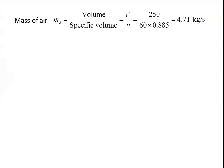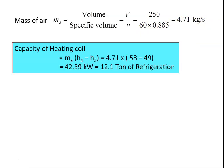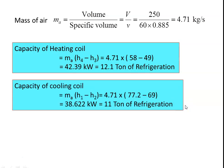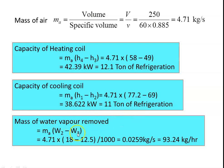Mass of air = 250 / 60 / 0.885 = 4.71 kg/s. Capacity of the heating coil = M × (H4 − H3) = 4.71 × (58 − 49) = 42.39 kW. Capacity of the cooling coil = M × (H1 − H2) = 4.71 × (77.2 − 69) = 38.6 kW. Since 3.5 kW = 1 ton of refrigeration, the cooling coil capacity is 11 tons of refrigeration. Mass of water vapor removed = M × (W2 − W3) = 4.71 × (18 − 12.5) / 1000 = 0.0259 kg/s = 93.24 kg/hour.